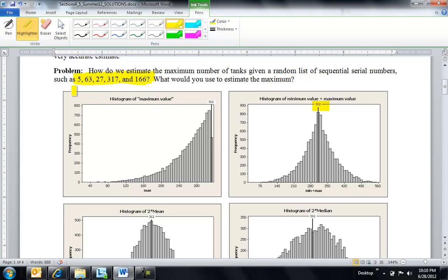One thing you could do is just take the max of your sample and hope that that's close to the maximum of your population. And so I did a bunch of simulations where if the max was 312 and took a random sample of five and every time took the max of that. And you can see you get a graph that always will underestimate what the true maximum is.